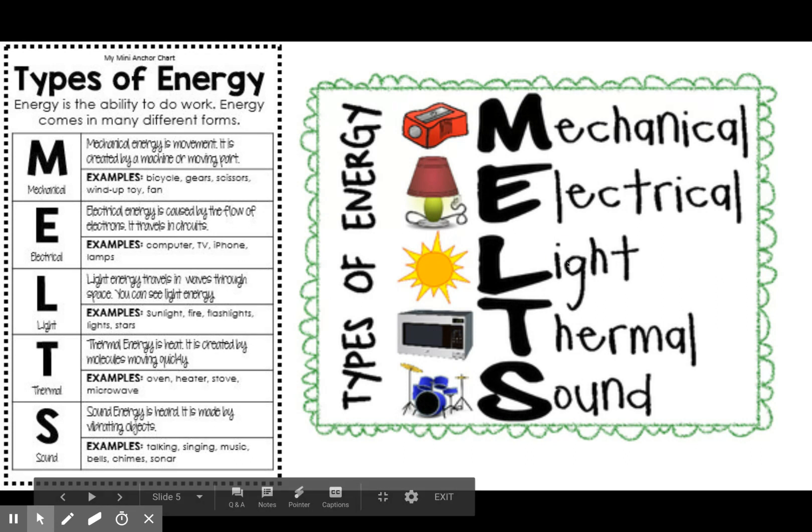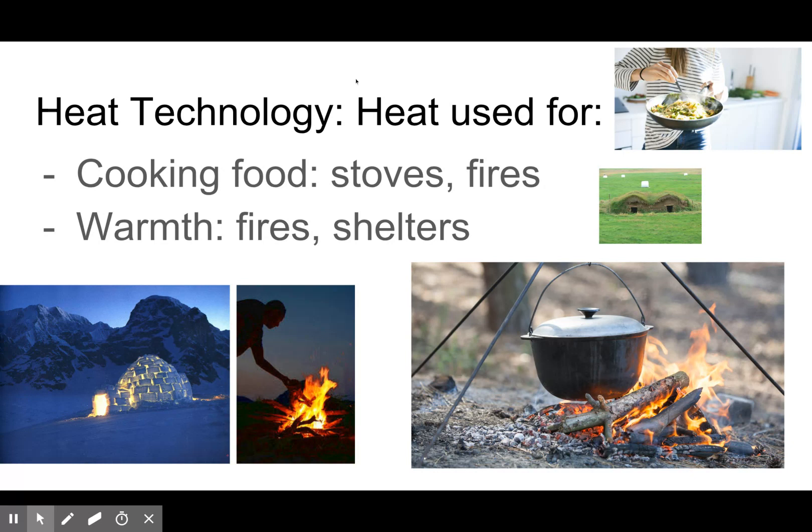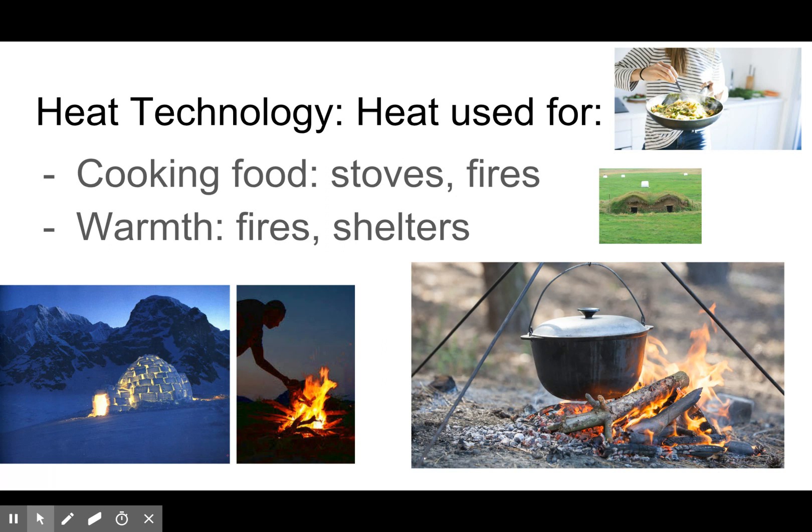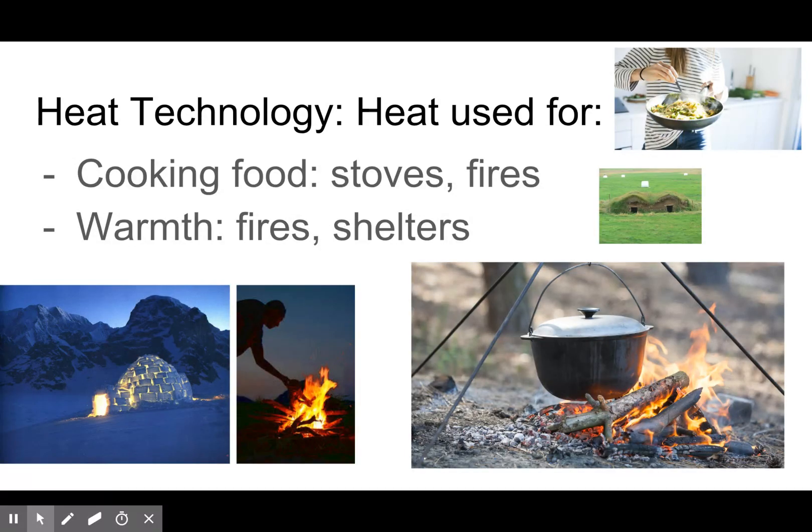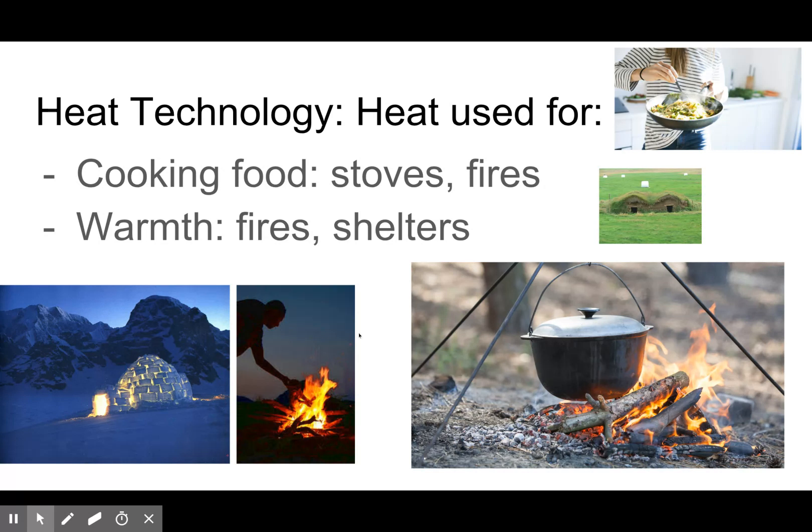When we talk about heat technology, heat is used by humans for cooking food. Think of the technological progression as we went from cooking on fires to now cooking on stoves. Also for warmth - humans need warmth. We don't produce our own heat very well or we lose it very easily. Fires, shelters, and clothing are all heat technologies.